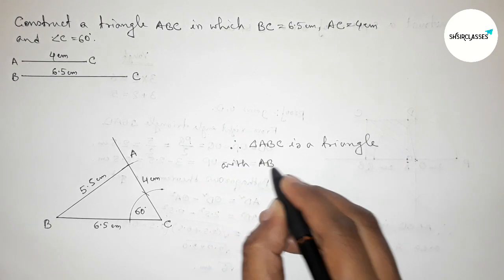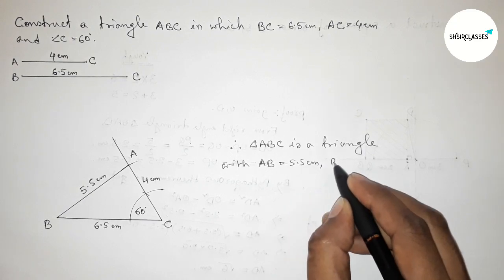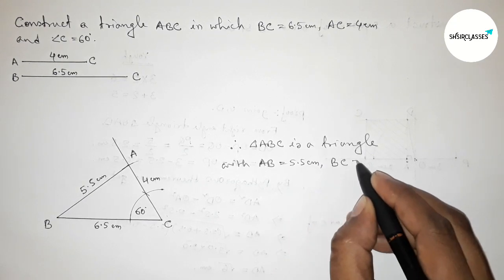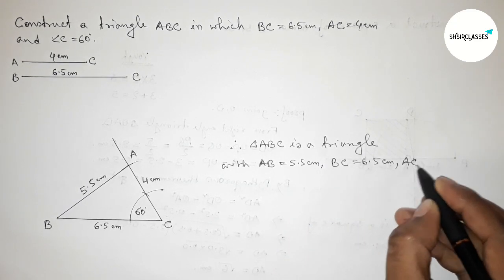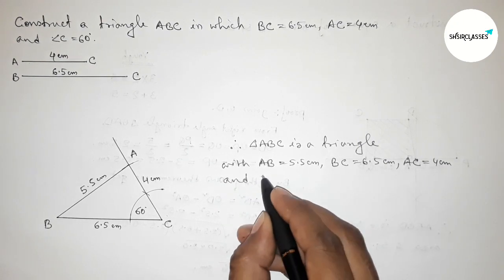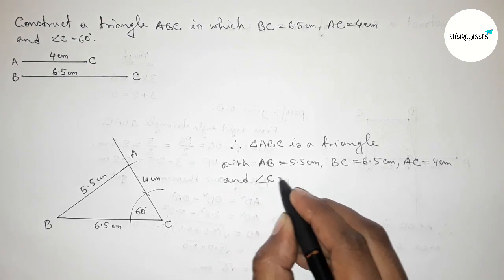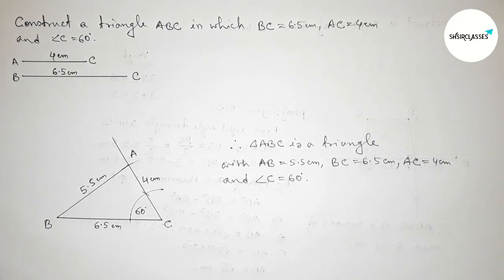Therefore, triangle ABC is constructed with side AB equals 5.5 centimeter, BC equals 6.5 centimeter, AC equals 4 centimeter, and angle C equals 60 degrees. That's all — thanks for watching. If this video is helpful to you, please like and share.